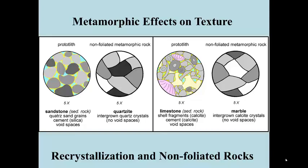In both of these cases, there's no segregation of light and dark minerals. The mineral crystals have no preferred orientation. Sandstone does not form tabular or flat crystals, neither does calcite. So there's no preferred orientation, there's no foliation in the system.